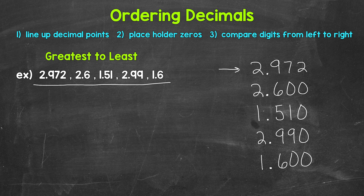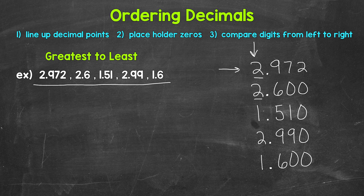Now we move on to comparing digits from left to right, so we can start putting these in order from greatest to least. We'll start with the place furthest to the left and work our way right. The furthest left here is the ones place — that's our greatest place value. We have a 2, a 2, a 1, a 2, and a 1. Since we're going from greatest to least, we want the largest digit, which is going to be these 2s. Now since we have three 2s, those digits are the same.